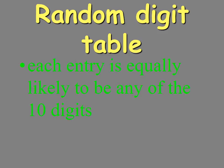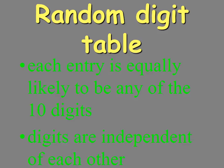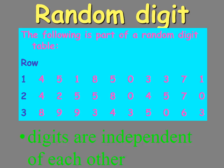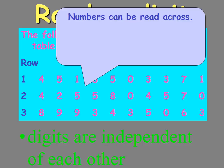We can also use a random digit table to do our selection process — it's something we want to know and understand. Each entry is equally likely to be any of the ten digits, and digits are independent of each other. We go through a systematic sampling process using rows to select the individuals for a given survey.